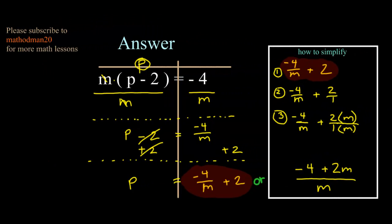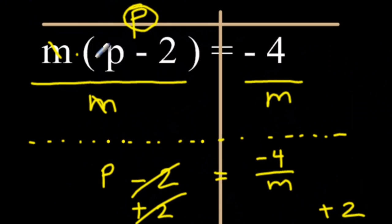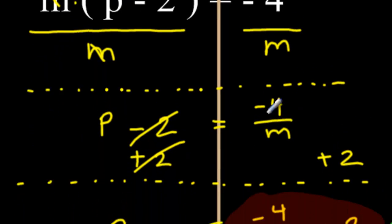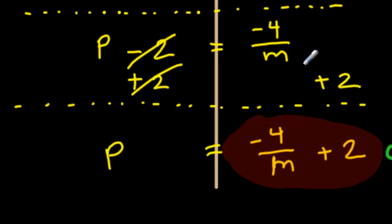Here is the answer. The first step is to get rid of the m. Since this is multiplication, divide by m on both sides. You're left with p minus 2 equals negative 4 over m. The next step I did was to add a 2 to both sides. Since I can't add a 2 to this term, I just put it aside. P equals negative 4 over m plus 2 as your answer.